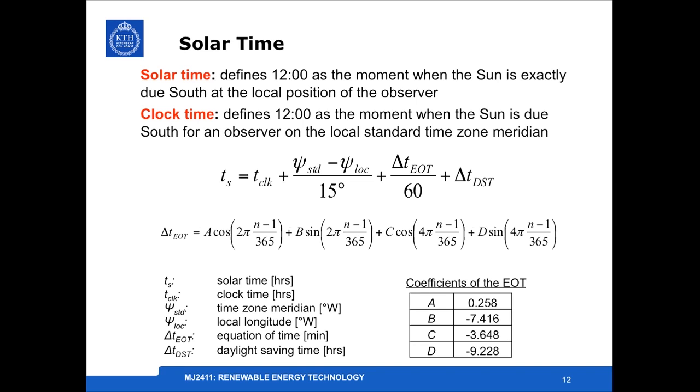Solar time defines 12:00 as the moment when the sun is exactly due south at the local position of the observer, whereas clock time defines noon as the moment when the sun is due south for an observer on the local standard time zone meridian.